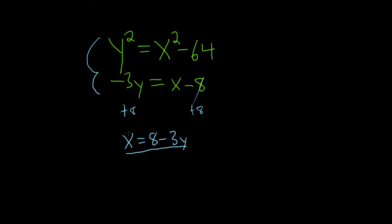And then we can take this x and we can plug it into the first equation. So let's go ahead and do that. So if we do that, we get y squared equals, and then now we will replace x with 8 minus 3y. And that whole thing is squared. And minus 64.